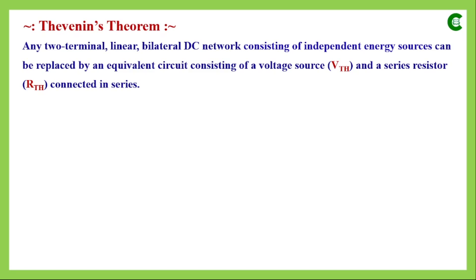Other than the variable component, in Thevenin's theorem the rest of the circuit will be replaced by a single voltage source denoted by VTH, where the suffix TH stands for Thevenin. Along with that voltage source, a single resistor connected in series is denoted by RTH — the TH suffix comes from the name Thevenin.